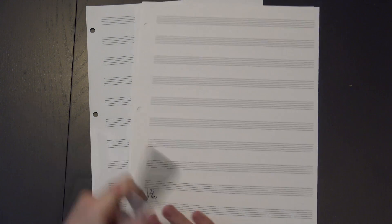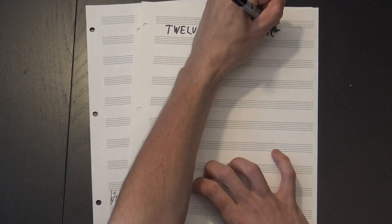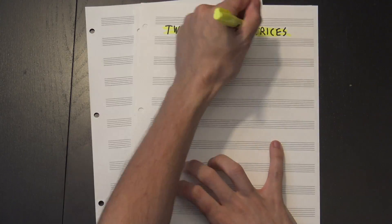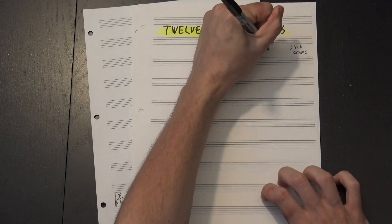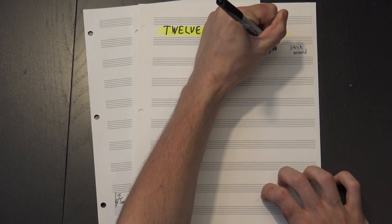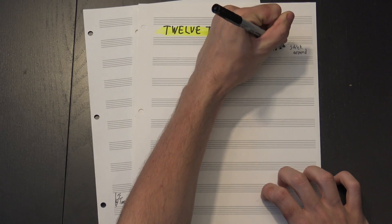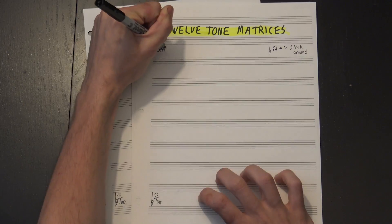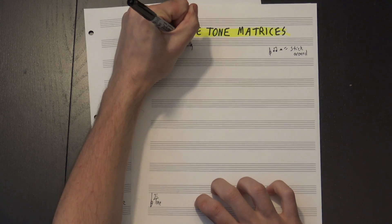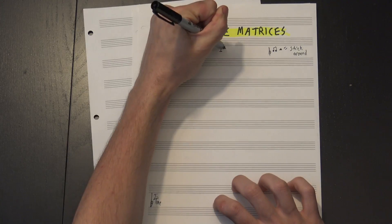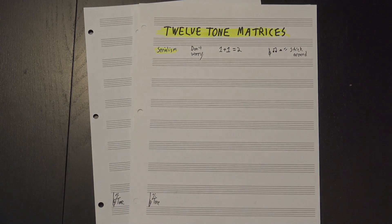Hey guys, welcome to 12tone! Today we're going to talk about 12-tone matrices, and if you stick around till the end we'll have some tips on turning a row into an actual composition. Like a lot of serialism, this gets a little mathy, but don't worry — it doesn't really go beyond basic arithmetic.